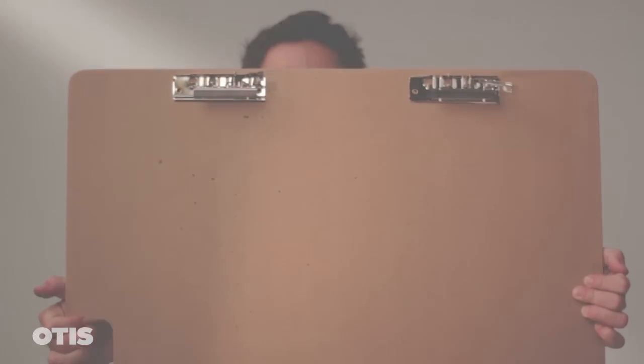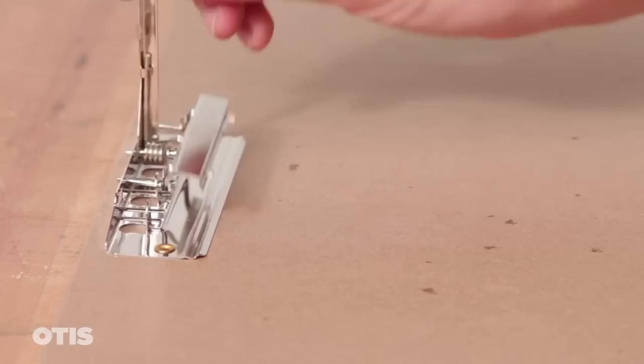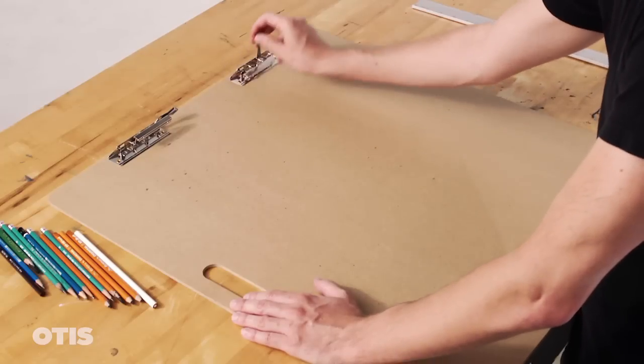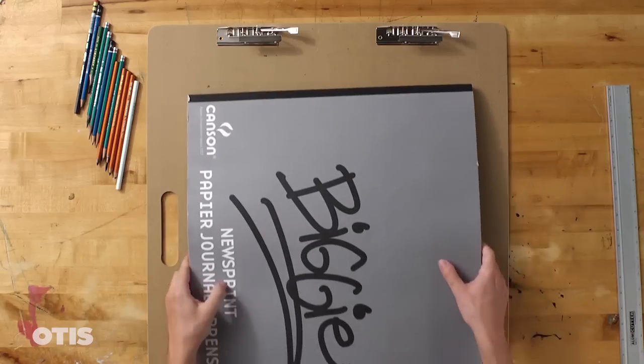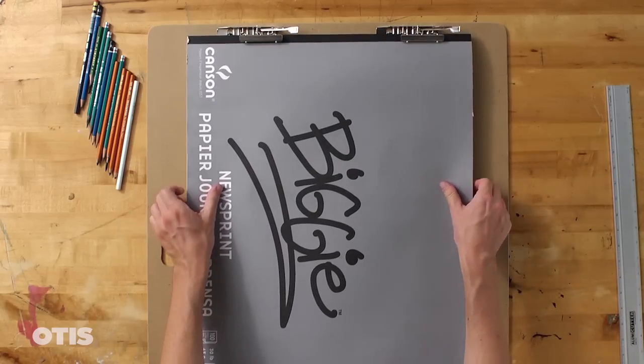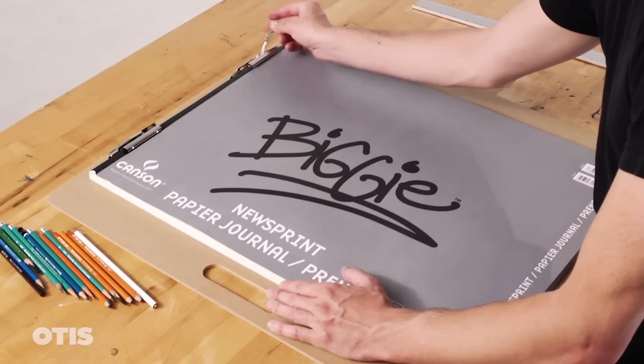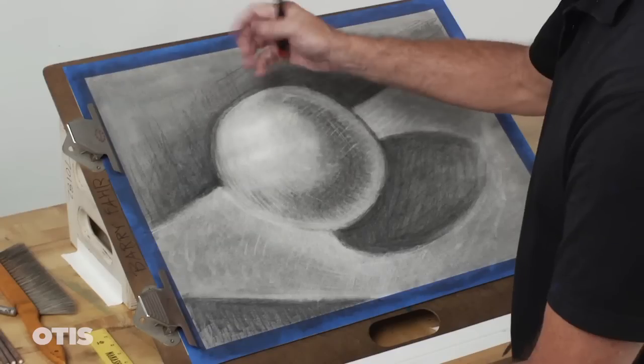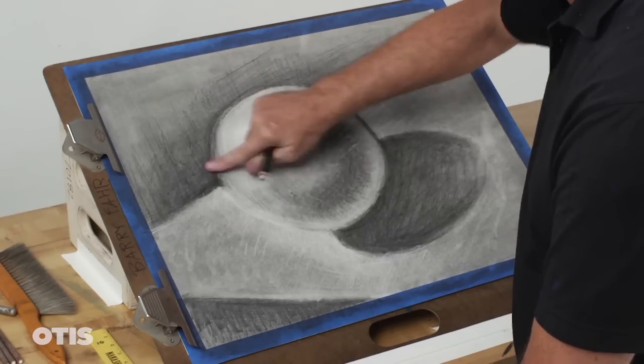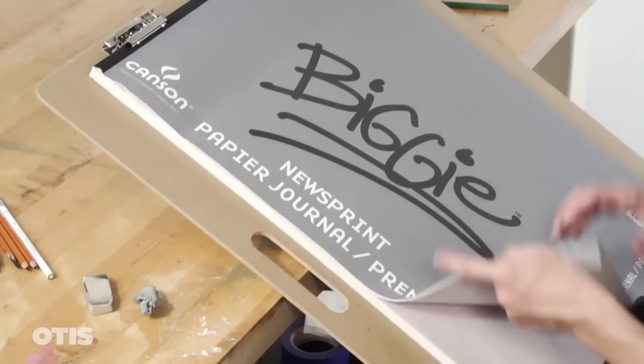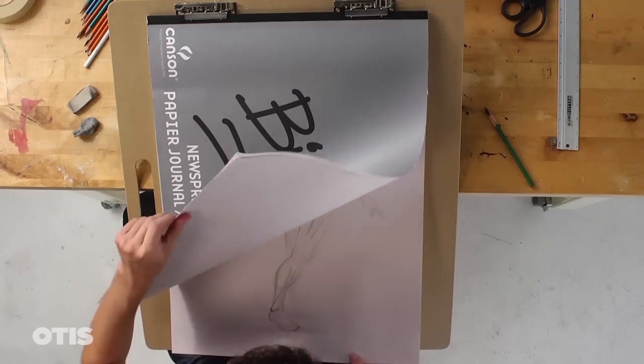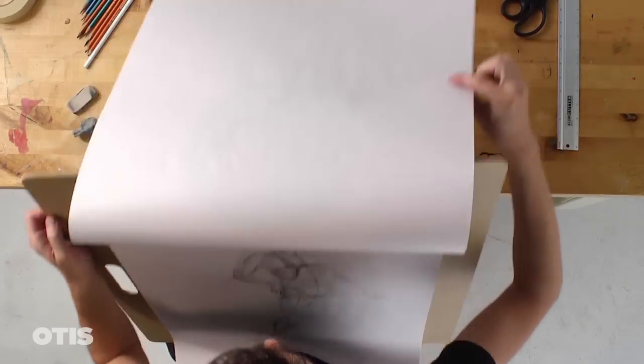A drawing board gives you a firm surface to work against. You can also rest it on an easel, or on your thighs against a table or sawhorse to make it easier to reach all parts of a large drawing.